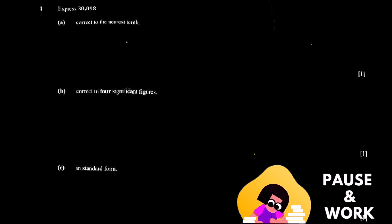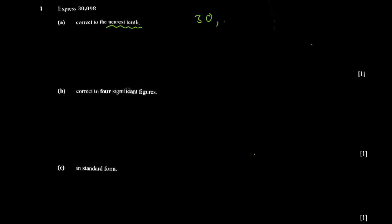The first question says: express 30.098 correct to the nearest tenth. On questions on approximation, what you do is find the digit they're talking about. They're talking about the tenth digit, which is the first digit after the decimal point — that's this zero here. You circle it, then look at the next digit. The next digit is nine, which is greater than five, so we round up and get 30.1.